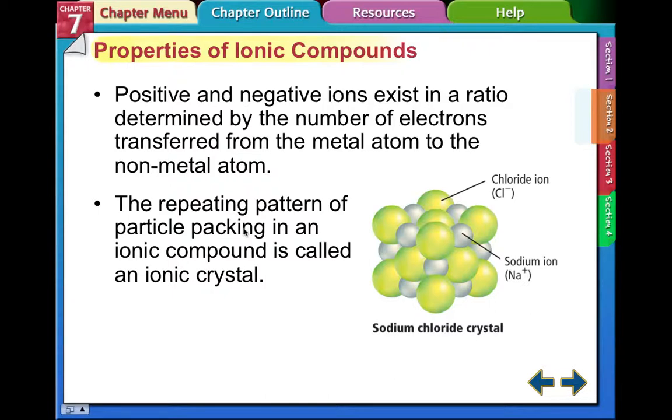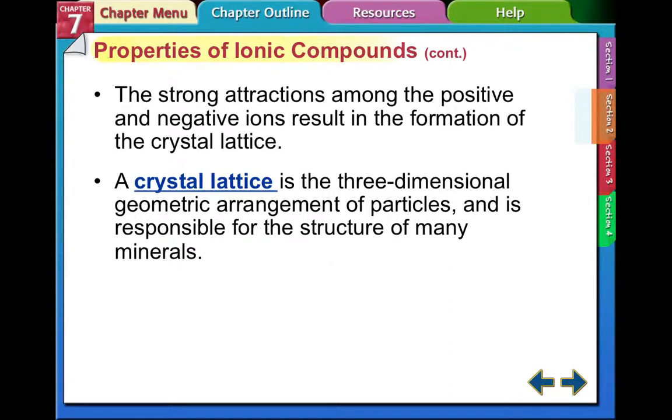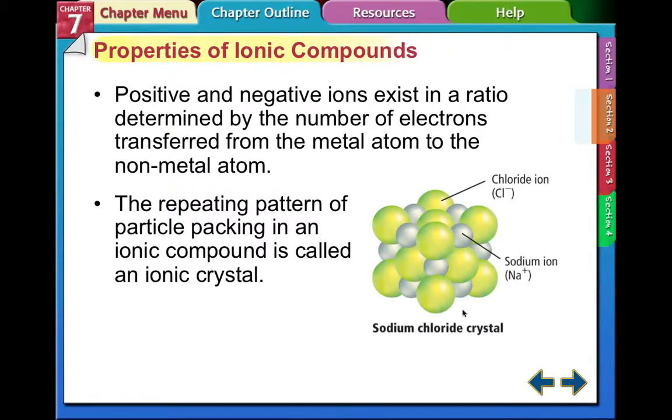Properties of ionic compounds. Positive and negative ions exist in a ratio determined by the number of electrons transferred from the metal atom to the nonmetal atom. Remember, we are working with the left-hand side of the periodic table and the right-hand side. This is a very nice picture of a crystal lattice. The repeating pattern of particle packing in an ionic compound is called an ionic crystal. Sodium chloride shows this very nicely. You can see how every other molecule is a positive and a negative, and how the positives and the negatives attract to each other with the sodium and the chloride.